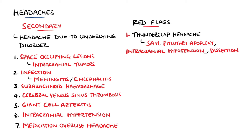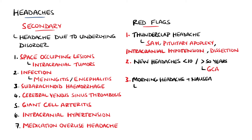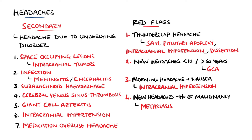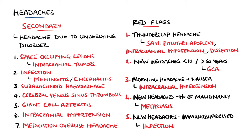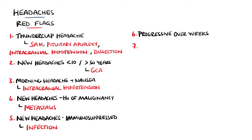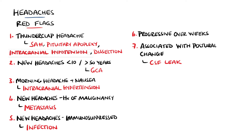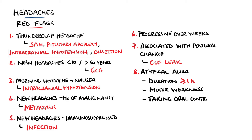A new-onset headache in patients under 10 or over 50 years of age should also be investigated, especially in older patients looking for giant cell arthritis, which can cause blindness if left untreated. Others include persistent morning headaches with nausea, which may indicate intracranial hypertension, and new onset of headaches in patients with history of cancer, which may indicate a metastasis or even thrombosis. Patients who are immunocompromised with a new headache should also be investigated to rule out a potentially infective cause. A headache progressing over several weeks, or a headache associated with postural change, which may indicate a CSF leak, should also be further looked at. Aura symptoms may be a red flag if they last longer than one hour, include motor weakness, are occurring while the patient is taking the oral contraceptive pill, or if the aura is different from previously experienced auras.